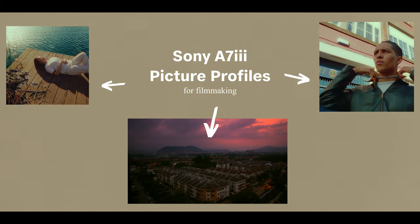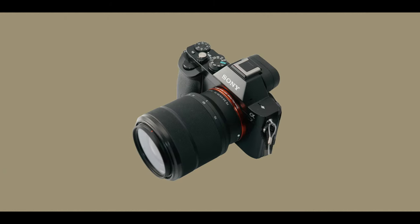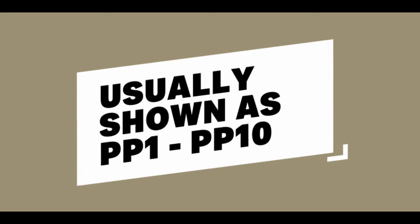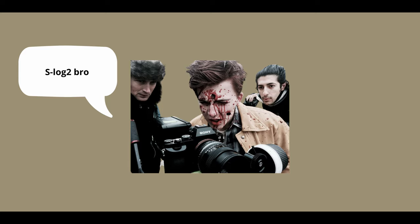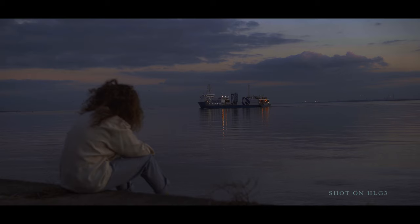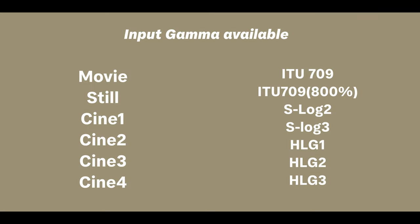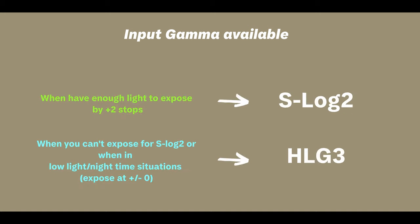In this video, we will go over the exact settings for our picture profiles on the Sony A7 III that we use for filmmaking. Each of the different picture profiles on Sony cameras corresponds to a different output image, due to the gamma found within each picture profile — S-Log2, Cine4, HLG3, S-Log3. After a lot of trial and error, we found S-Log2 and HLG3 work best to get the best results.